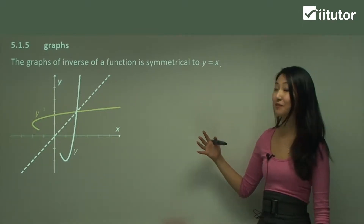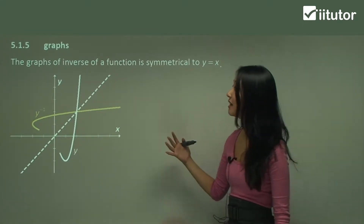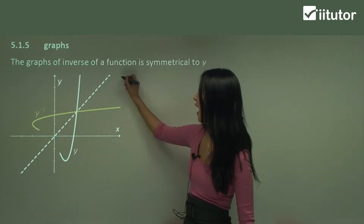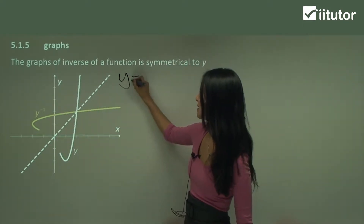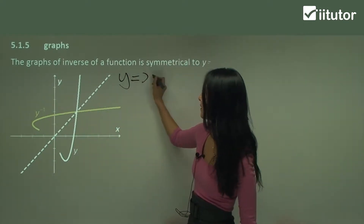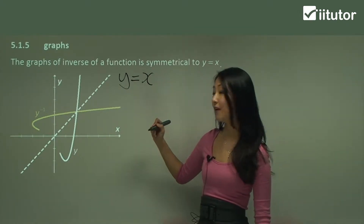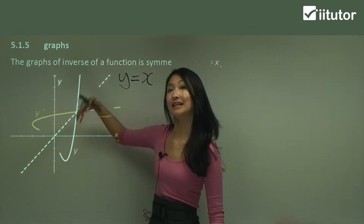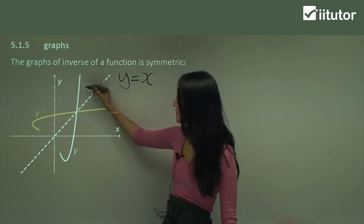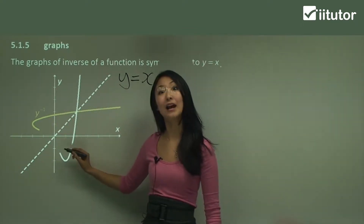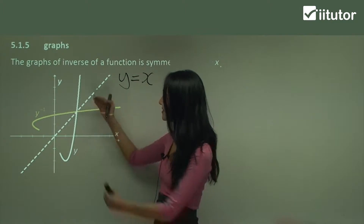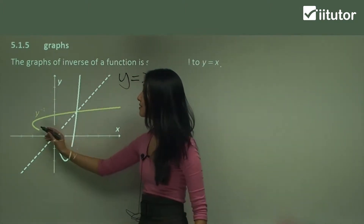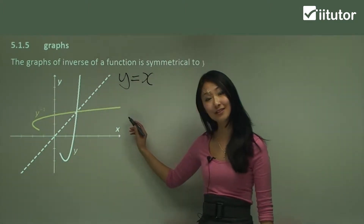So whenever you want to graph the inverse of a function, the best thing to do is to draw in a dotted line of y equals to x and know that the inverse function will be reflected in this line. So this white one here is our original function and can you see how that's flipped over to become this yellow graph to be our inverse.